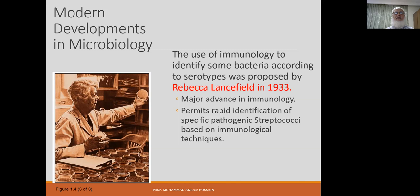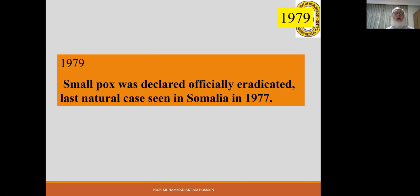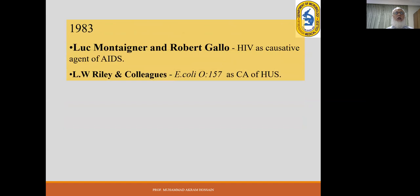Use of immunology to identify bacteria and their serotyping was proposed by Rebecca Lancefield in 1933. In 1958, WHO declared a campaign against smallpox globally, which began in 1967 and resulted in eradication in 1977. The smallpox vaccine was discovered back in 1796, so it took about 150 years after discovery to use this vaccine for the benefit of mankind. The last case was recorded in Somalia in 1977.